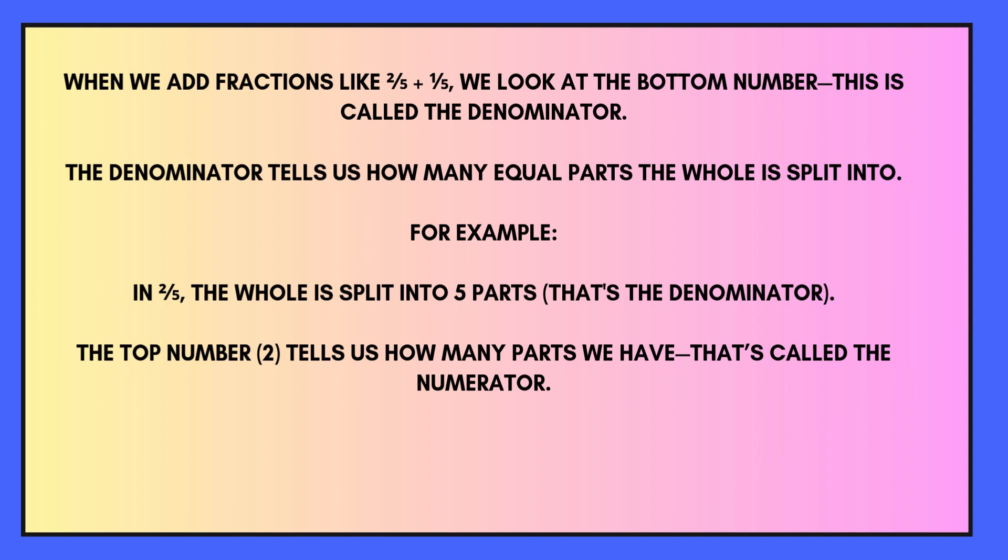When we add fractions like 2 fifths and 1 fifth, we look at the bottom number. This is called the denominator. The denominator tells us how many equal parts the whole is split into. For example, in 2 fifths the whole is split into 5 parts, so 5 is the denominator. The top number 2 tells us how many parts we have. That's called the numerator.